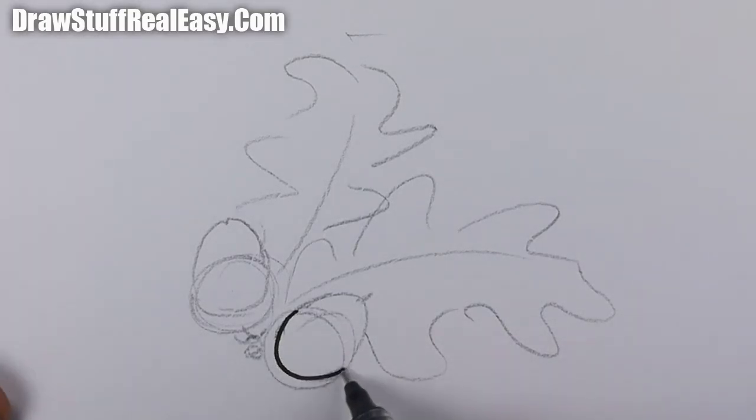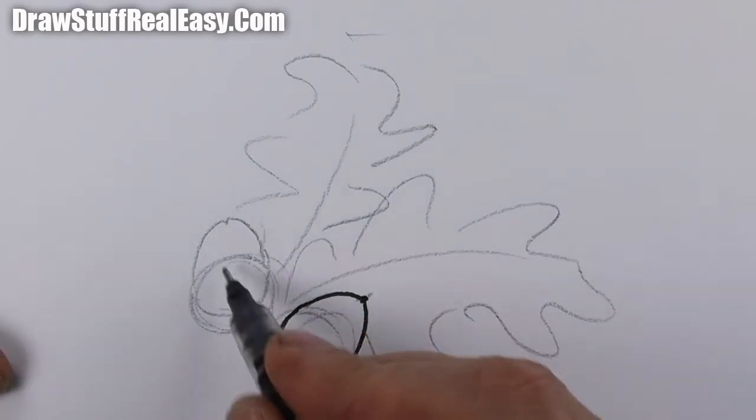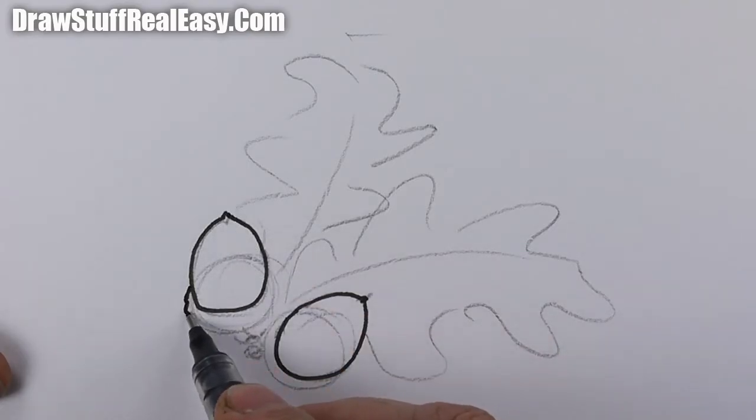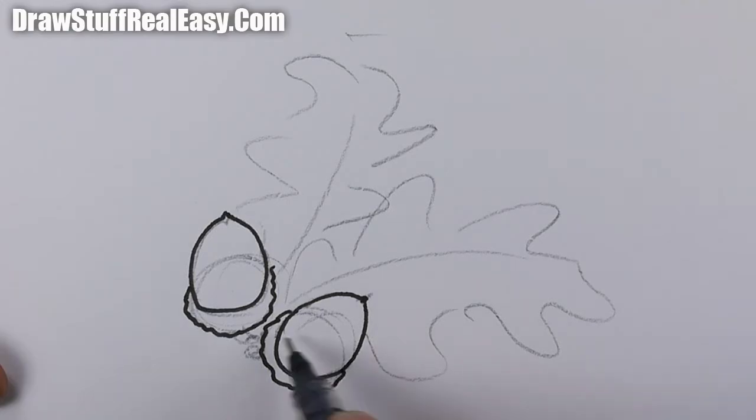If we draw around there like that, you're going to get a little bit on the end there. Then you want to do a wriggly kind of line like that, and a bit of a crisscross.